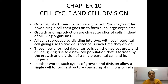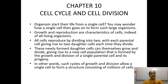All cells are produced by dividing into two, with each parental cell giving rise to two daughter cells each time they divide. Whenever any parental cell divides, it gives rise to two daughter cells. These newly formed daughter cells can themselves grow and divide, giving rise to a new cell population. In this way, the population increases — formed by the growth and division of a single parental cell and its progeny.